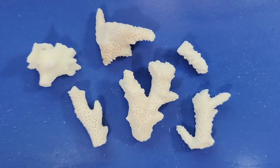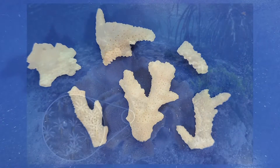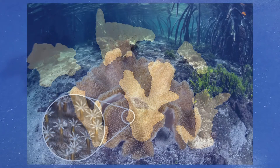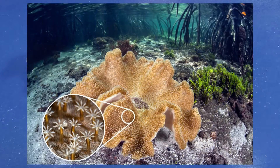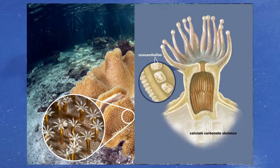Corals are actually animals. The branch or mound that we often call a coral is actually made up of thousands of tiny animals called polyps. Polyps are tiny soft-bodied organisms that are related to sea anemones and jellyfish.